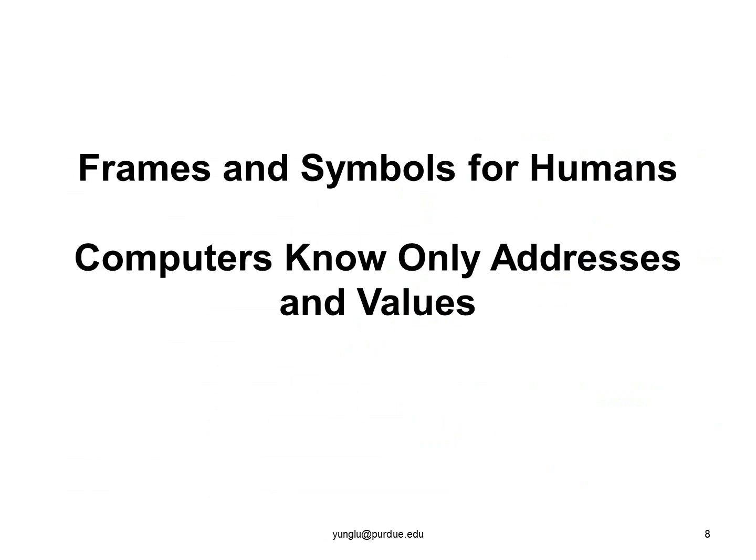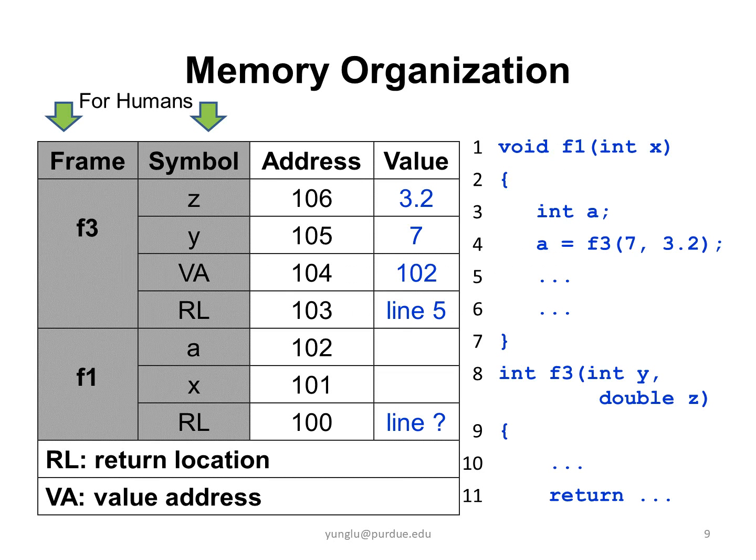The previous slide shows the four columns in the stack memory. In fact, the frames and the symbols are for humans only. Computers do not know frames and symbols. Computers know only addresses and values. Even though computers do not know frames and symbols, it is helpful to include them when we draw the stack memory because the information helps us keep track of which function and which symbol we are discussing.